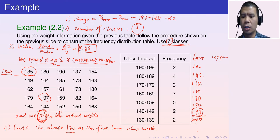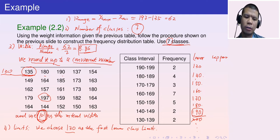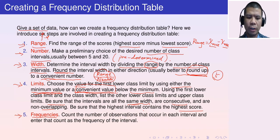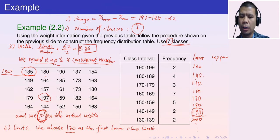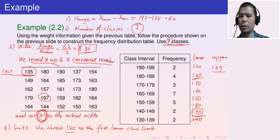For the upper class limits: since all data values are integers and intervals must be non-overlapping, the upper limit of the first interval is 140 − 1 = 139. The second interval runs 140 to 149.